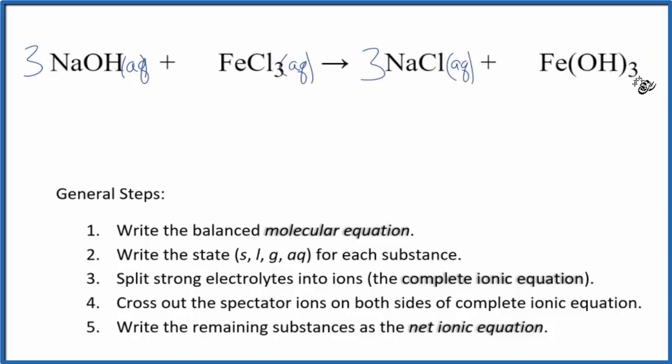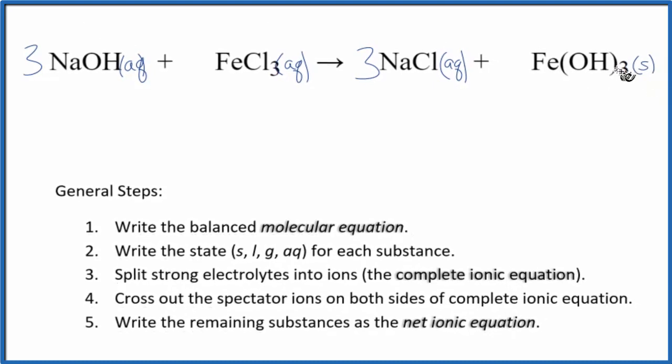For the iron 3 hydroxide, hydroxides in general are insoluble. There are some exception elements in group 1 like sodium and potassium, lithium. Those are soluble, but most of them are insoluble. So we're going to call this a solid. Since it's insoluble, it'll be a solid.